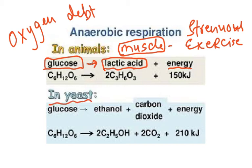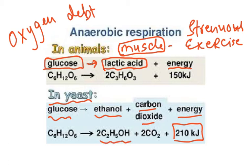In yeast, anaerobic respiration breaks glucose down to produce ethanol (C₂H₅OH) and carbon dioxide, again releasing only a little energy. You need to know the formula for ethanol — C₂H₅OH — and for lactic acid — C₃H₆O₃, which is nearly half of the glucose molecule. These formulas are important for MCQ questions.